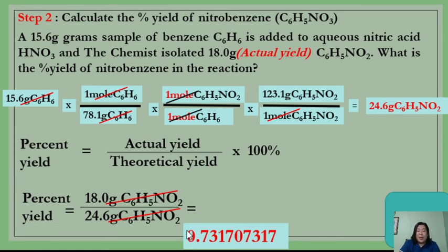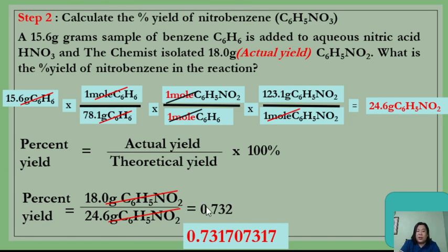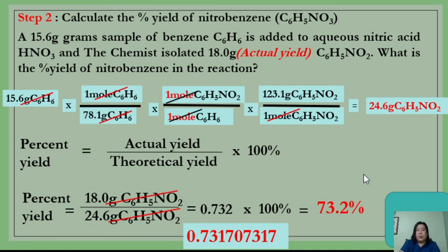So 0.732 has 3 significant figures — the leading zero is not counted as significant, but it is written because it indicates the place value of the measurement. Multiply 0.732 by 100 and you get 73.2%. This is the percentage yield of nitrobenzene.